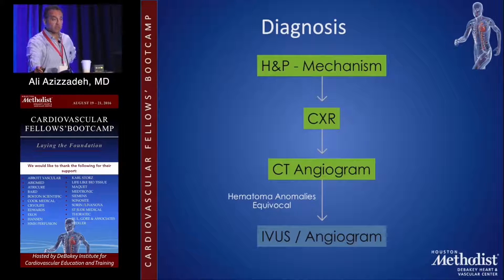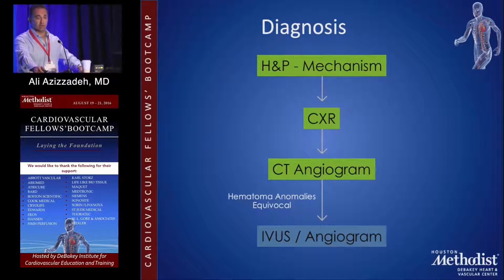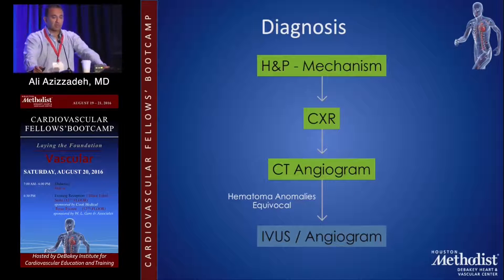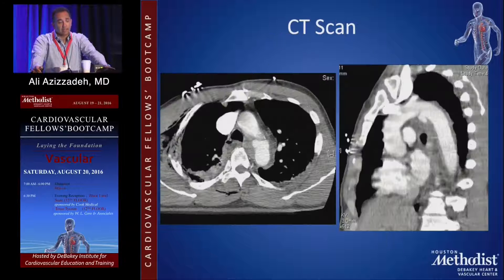The diagnosis is based on mechanism, so history and physical is very important if the patient can talk. Chest X-ray is the initial diagnostic test, but the gold standard is the CT angiogram. For patients who have equivocal CT scans, the best test is an intravascular ultrasound or an angiogram.